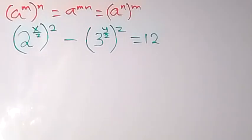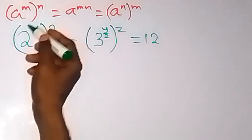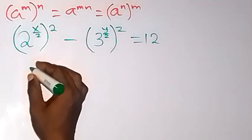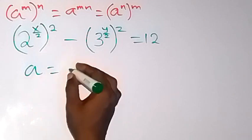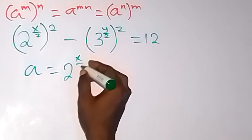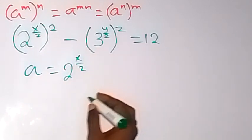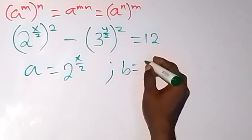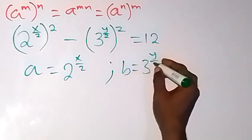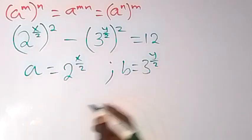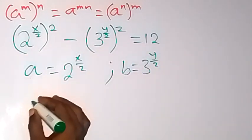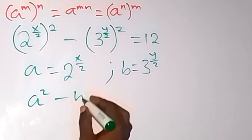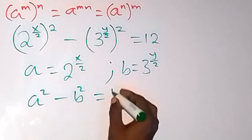To make our work easier, we can use a letter to represent each term. Let a equal 2 raised to power x over 2, and let b equal 3 raised to power y over 2. This makes things easier to write. We now have a squared minus b squared equals 12.